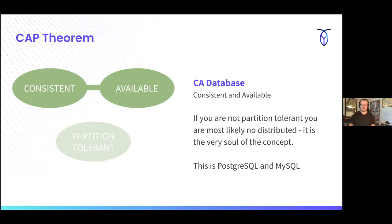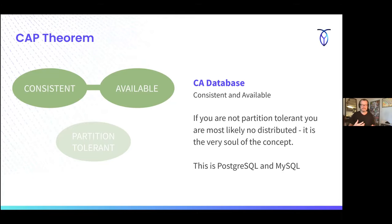The permutations are three. There's a CA database — consistent and available. If you aren't partition tolerant, then you're not really distributed. A CA data system is Postgres, a single instance of MySQL, a single instance of Oracle. It's consistent and available on a single node. There's no partitioning of that thing. I don't think of that as a distributed system because partition tolerance comes into play here.